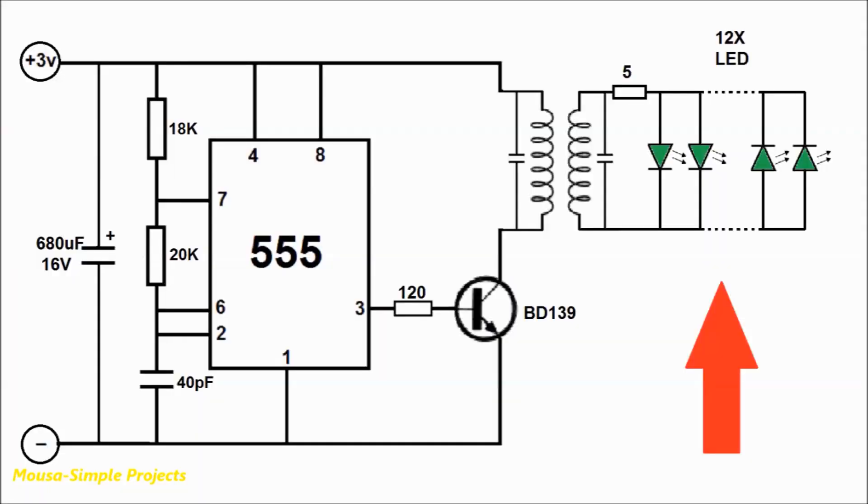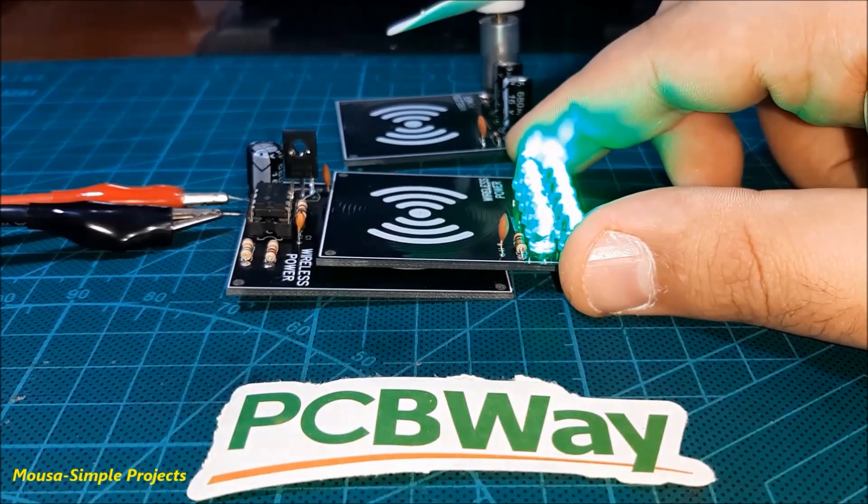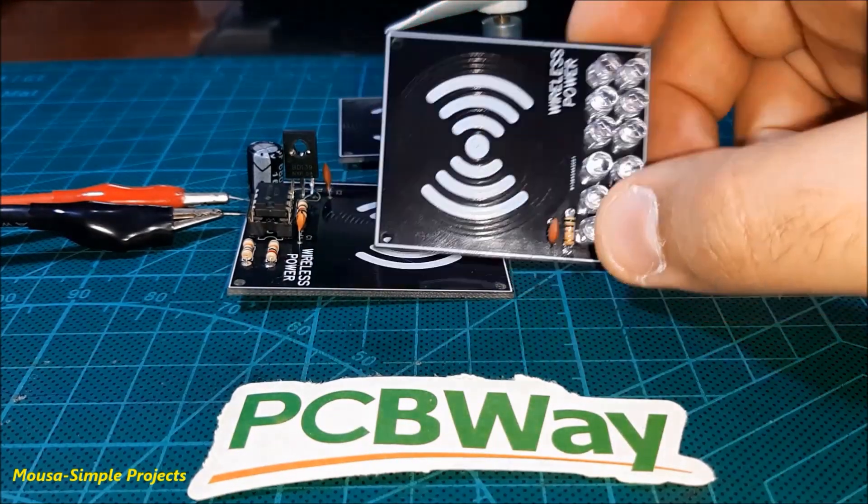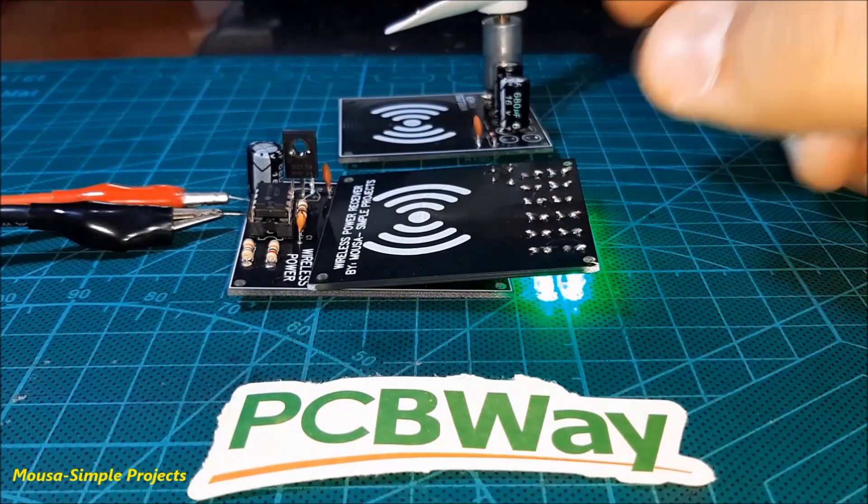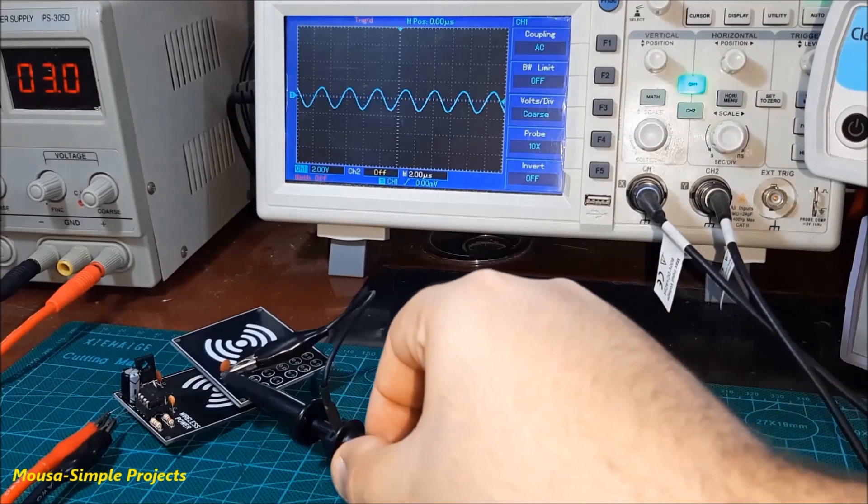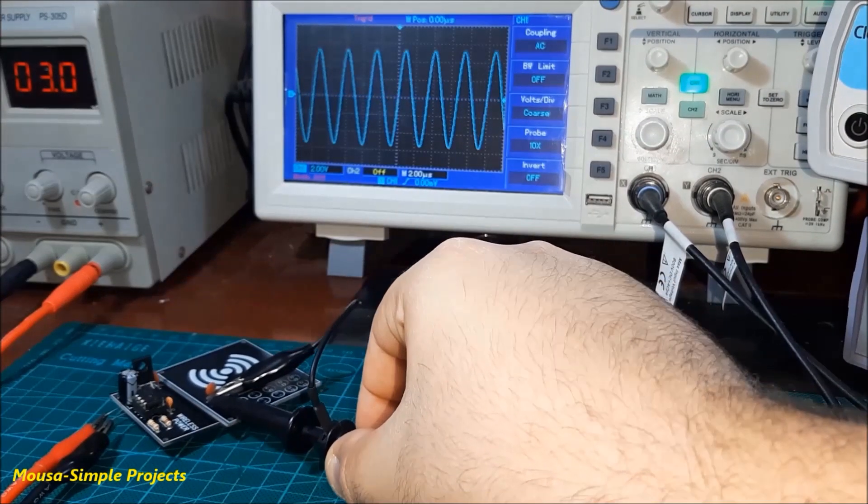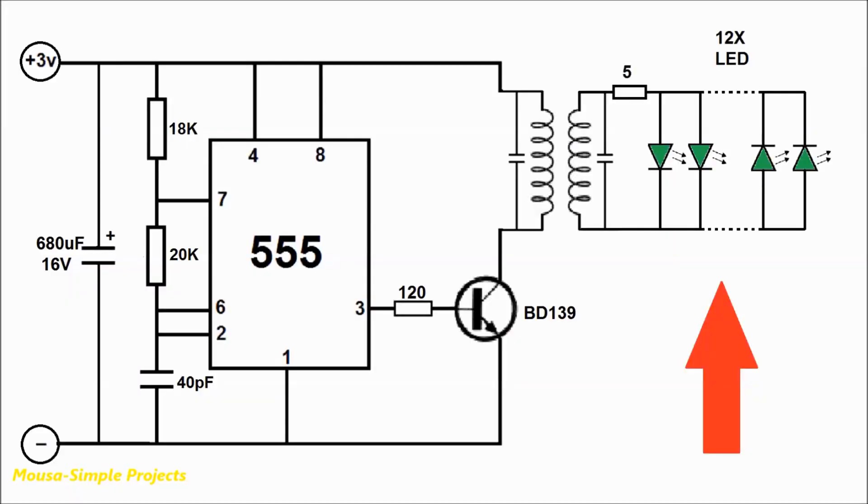I connected some LEDs to the receiver coil as a load, and as you can see the circuit working. Since the output voltage in the receiver coil is an AC voltage, so I connect the LEDs in different directions.